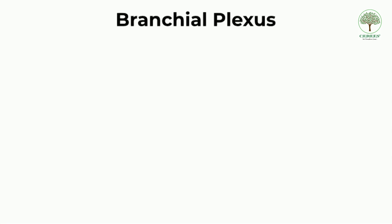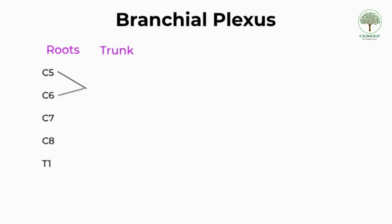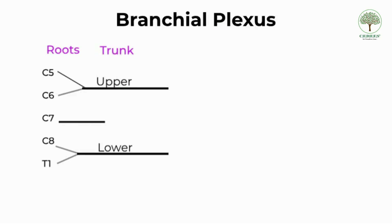The brachial plexus is a network of nerves which supply the upper limb. It is formed by the ventral rami of the spinal nerves C5 to T1 and is located in the axilla. The roots emerge between the scalene muscles in the neck. The roots of C5 and C6 unite to form the upper trunk, C8 and T1 unite to form the lower trunk, and C7 continues as the middle trunk.